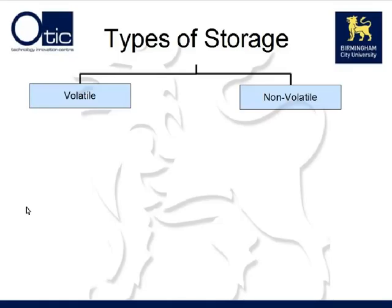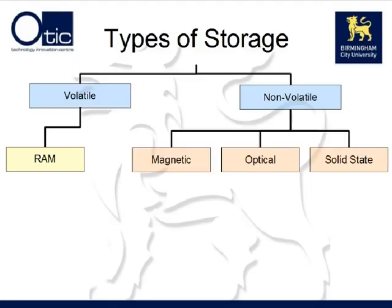Now let's have a quick look at the types of storage technology available and how we can classify them. There are two broad categories of storage: volatile storage and non-volatile storage. Volatile storage loses the stored data when the power of the computer is turned off. Non-volatile storage retains the data when the power is turned off. An example of volatile storage is random access memory, RAM. Non-volatile storage can be broken down into three discrete technological groups: magnetic storage, optical storage, and solid-state storage.